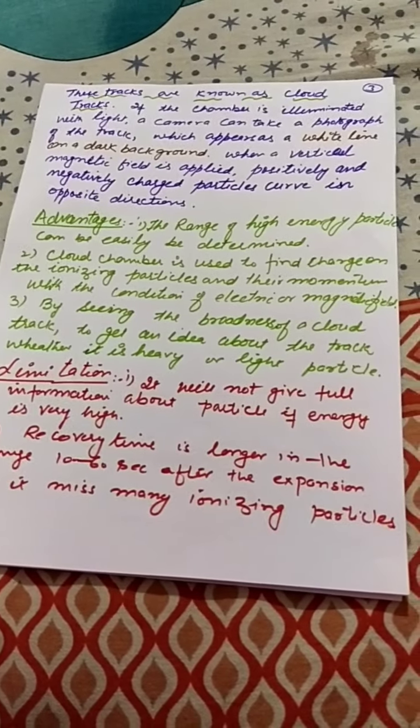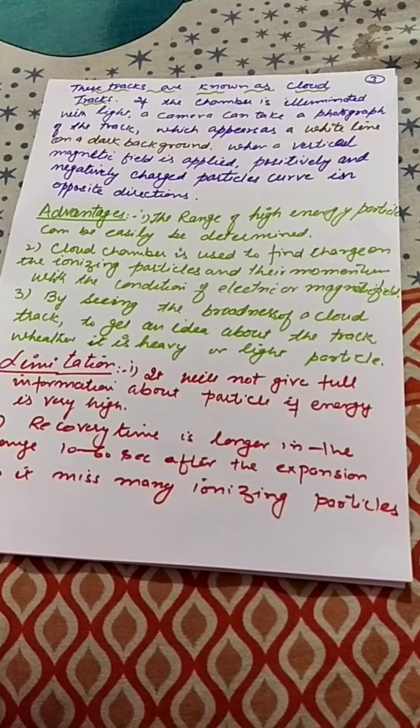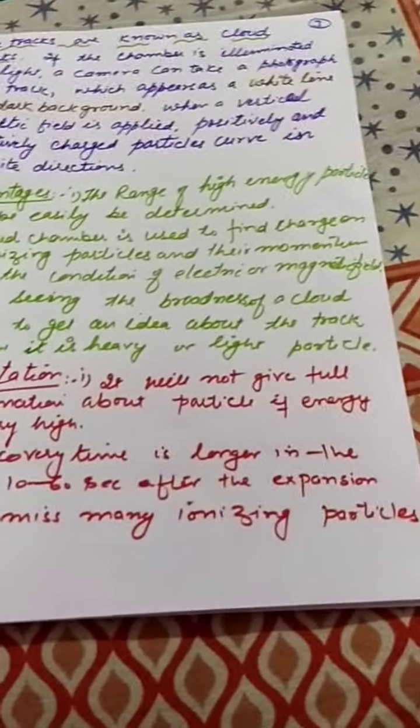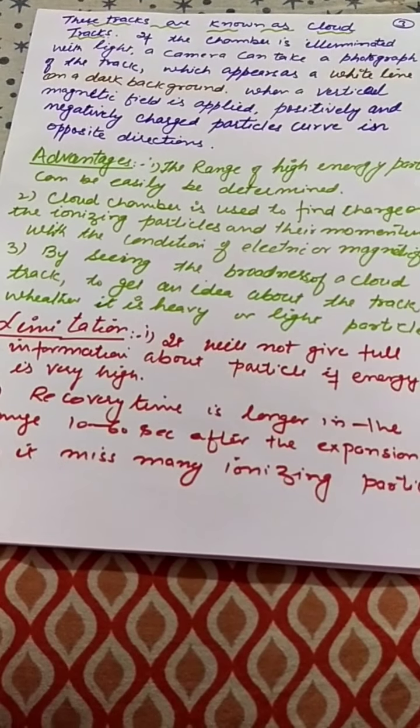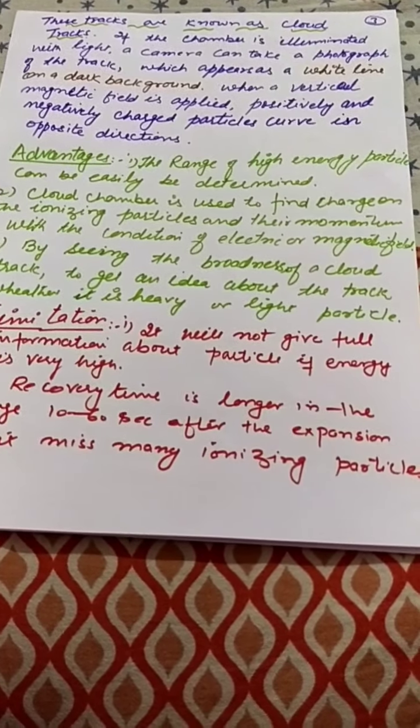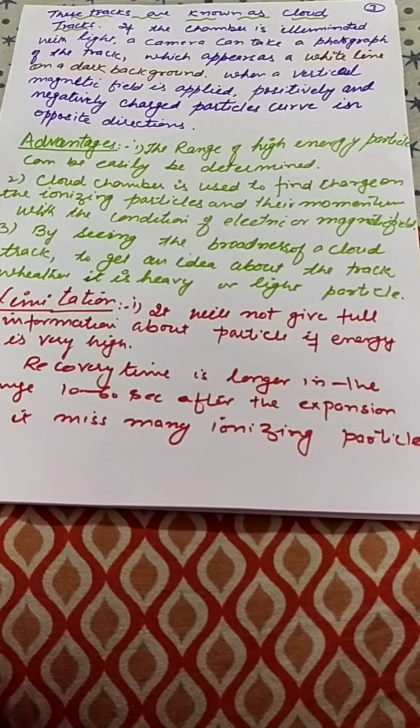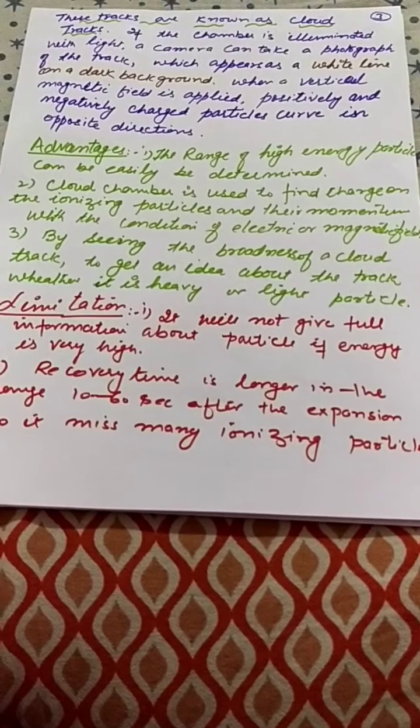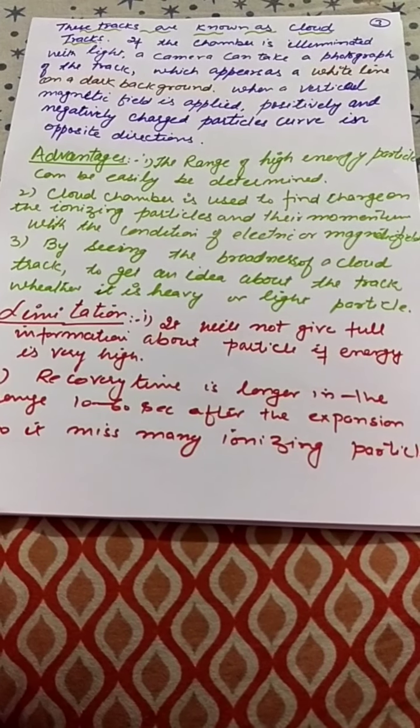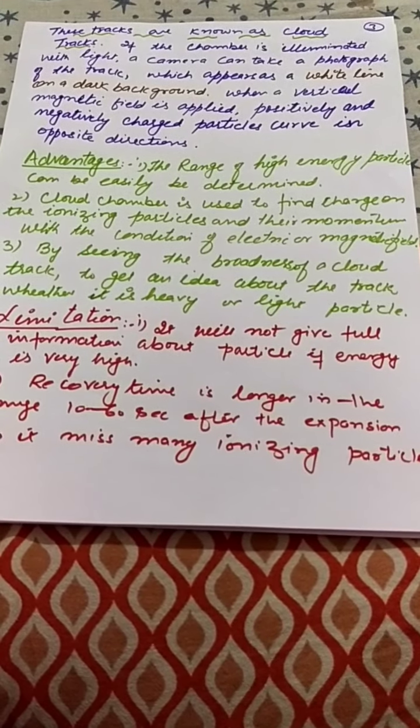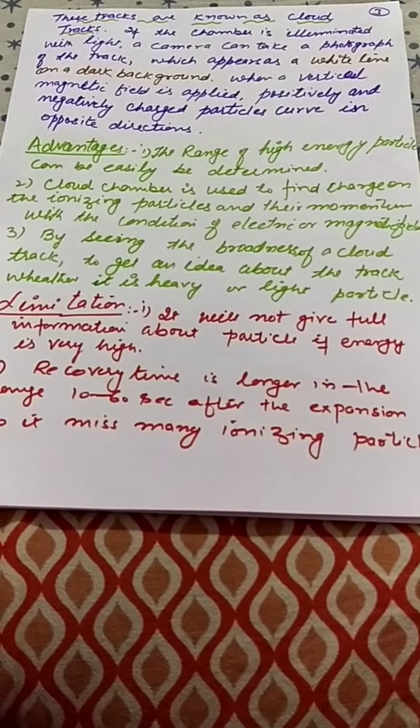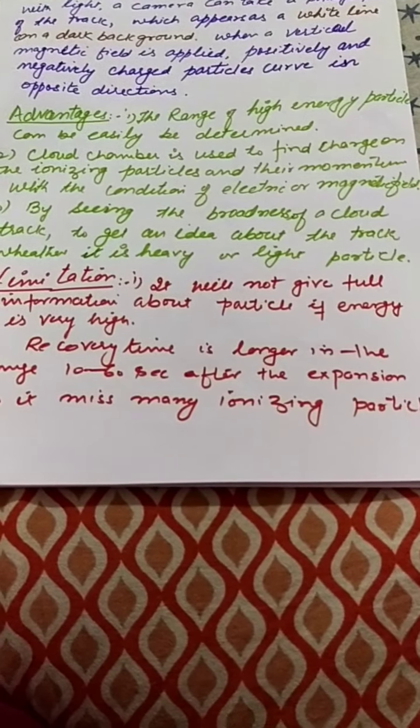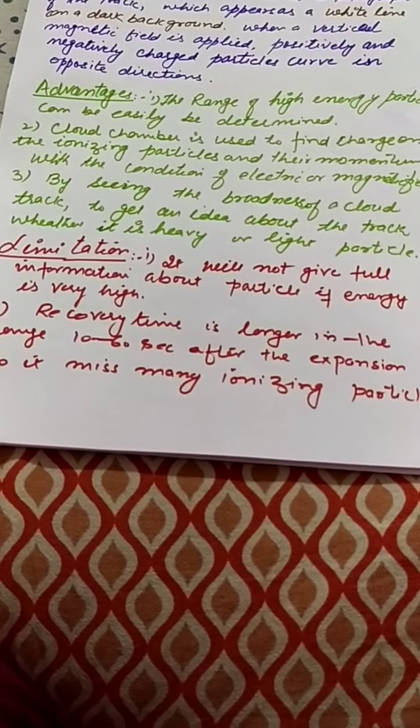Now some advantages are listed here. With a cloud chamber, the range of high energy particles can easily be determined. While seeing the broadness of the cloud track, we can immediately get an idea whether the track is due to heavy particles such as alpha particles or light particles like electrons. When electric and magnetic fields are applied, the cloud chamber is used to find the charge on the ionizing particles and their momentum.